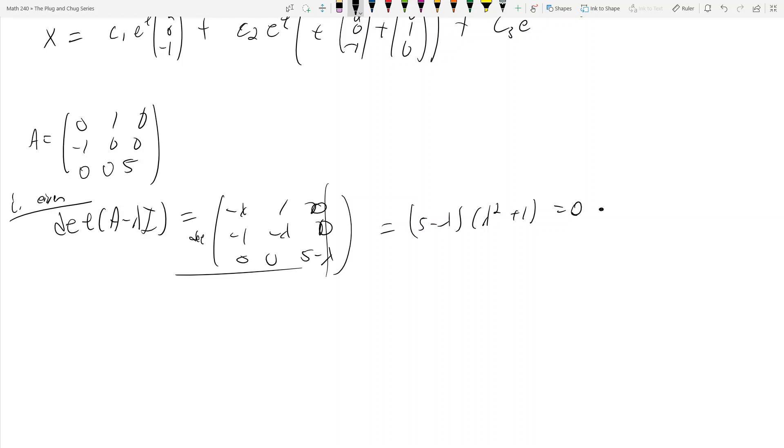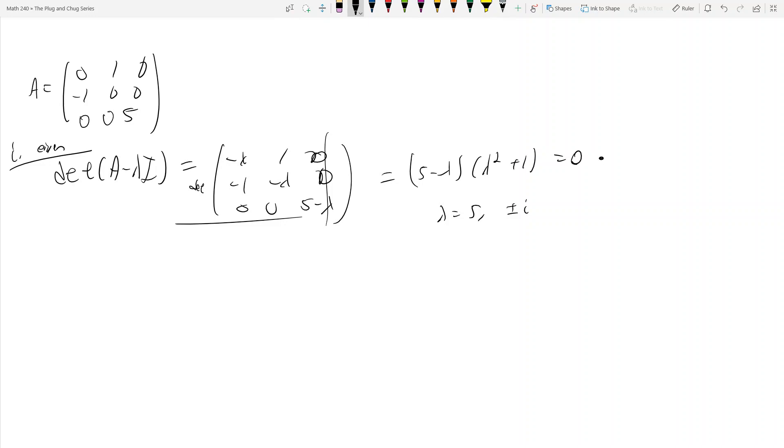And now what do I have? Now I've got lambda is equal to 5 and lambda is equal to plus or minus i, right? Okay, and so now you want to find your eigenvectors.